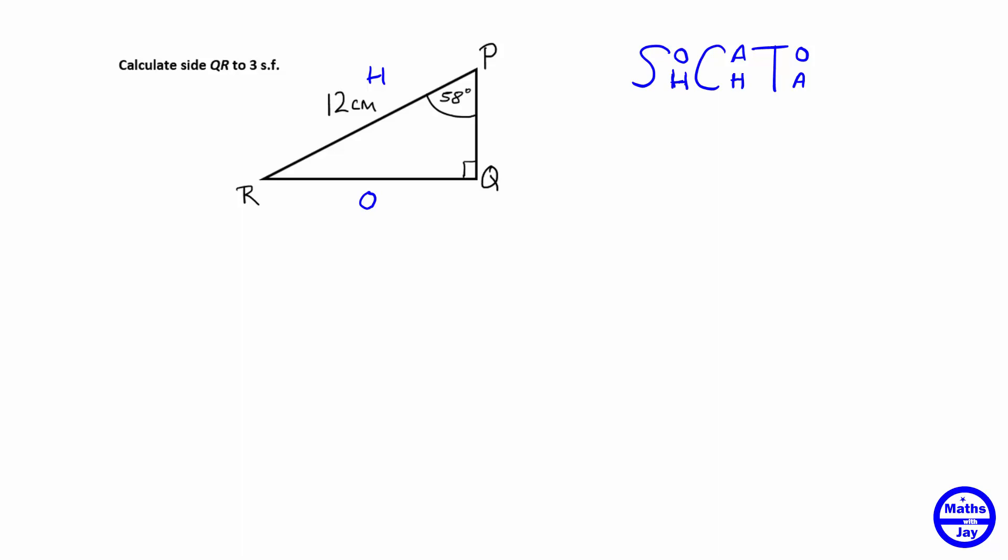The other side PQ would be the adjacent side because it's touching the angle, but if we just look at those two sides then it will show what we want to use here so we've got O and H involved so opposite and hypotenuse so we want to use sine ratio.